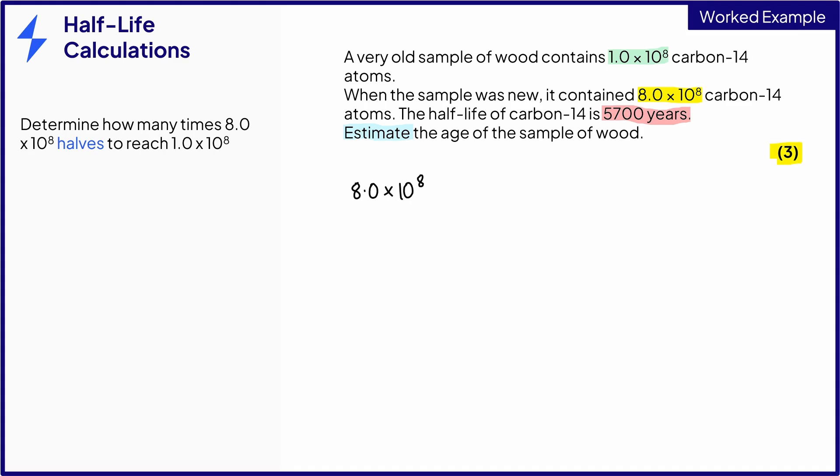So, first we halve 8.0 times 10 to the 8, giving us 4.0 times 10 to the 8. This is not our final number of nuclei, so we halve again. This is still not our final number of nuclei, so let's halve one more time. Now, we've reached our final number of active nuclei from the question, 1.0 times 10 to the 8. We have halved the number of carbon-14 atoms three times. This means that three half-lives have passed, which is the first mark.